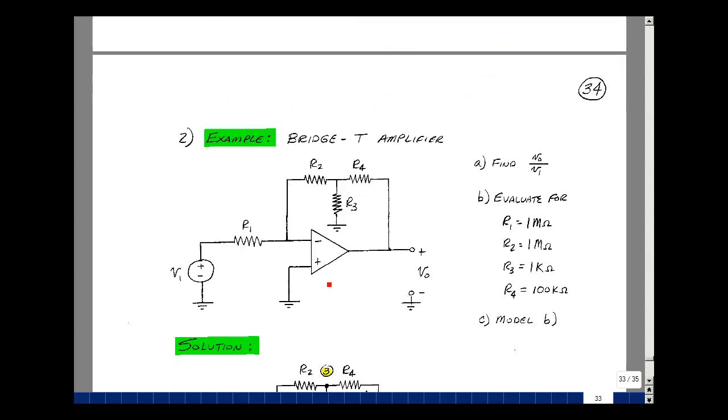This op-amp circuit with four resistors and one input is called a bridge T amplifier. Now this may look like an inverting amplifier, but what I've got here is this node. And in our model, there is no such node. So we have to go back to analyzing this just using Kirchhoff's voltage law and current law. Let's solve for Vout in terms of V1, and let's evaluate our resulting gain equation with these values of resistances. And then we'll develop a model for the circuit.